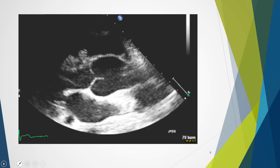In this example of Marfan's disease, we see the typical onion bulb look to the aortic root — large and bulbous here — with a significant dimension, and then tapering down to the ascending aorta size.